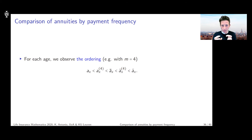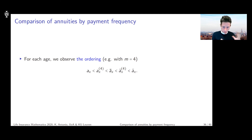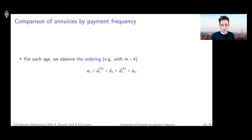One of the things we need to keep in mind when deriving this ordering is that a payment made earlier is more expensive than a payment made later. If you do the payment later, the financial discounting factor comes into play — if interest rates are positive, that makes the payment cheaper in terms of its EPV. So that's the first thing to keep in mind.